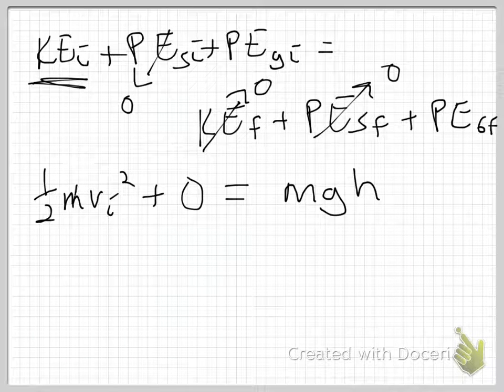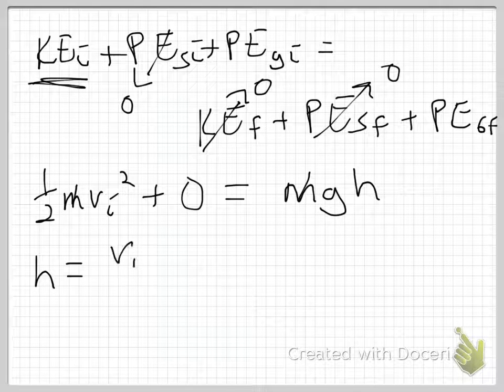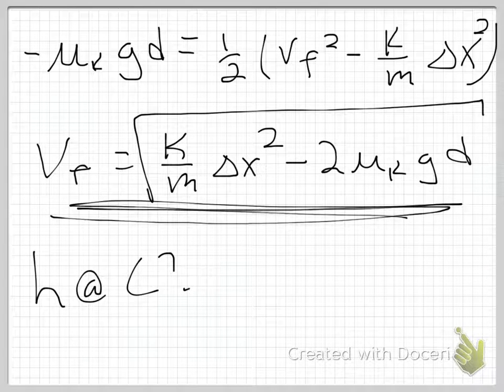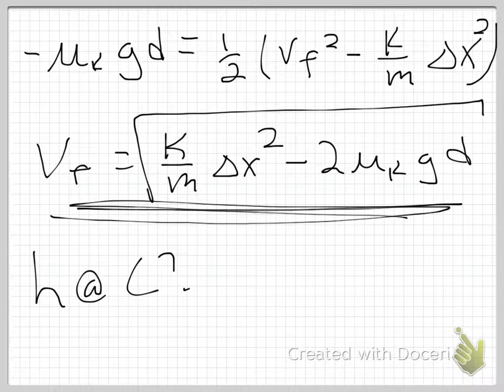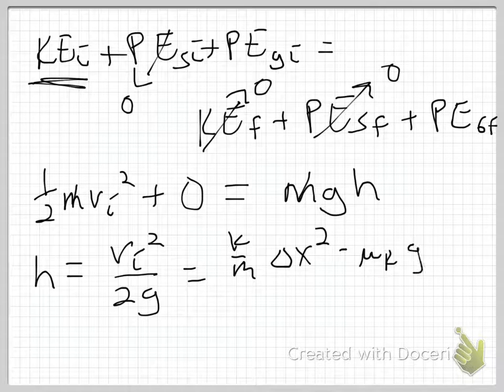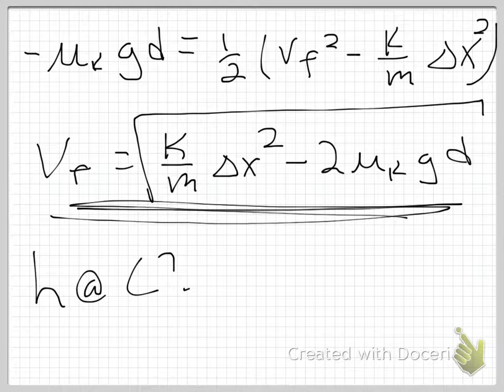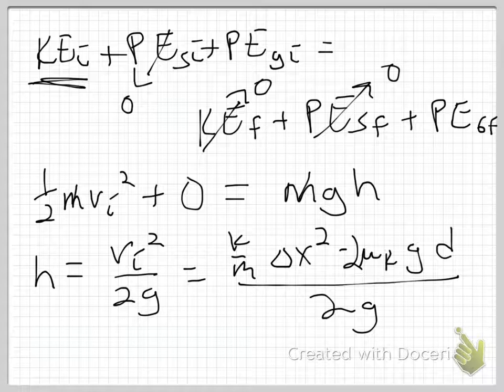Again, I can cancel out an m. And what I'm looking for is h. If I divide both sides by g, I get it. h is equal to v initial squared over 2g. And what is my v initial? Well, it's this disgusting thing here. If I square it, I just remove the radical. And what I get is k over m delta x squared minus, I believe it was mu k, acceleration due to gravity, distance d. And that is over 2g. Let me check and make sure I got that right. 2. There's a 2 here. Yep. k over m delta x squared minus 2 mu sub k g times the distance d over 2g. And that is what I get is my height.